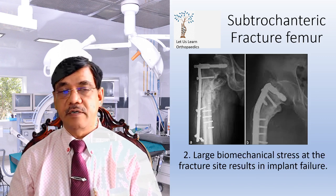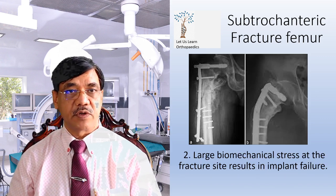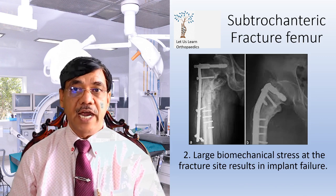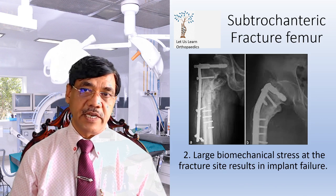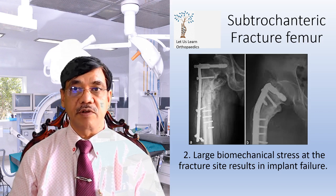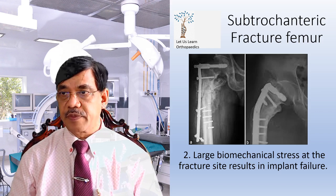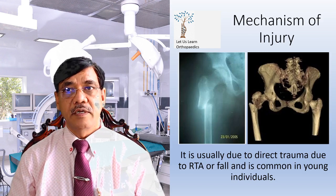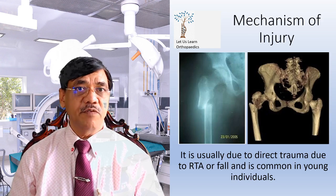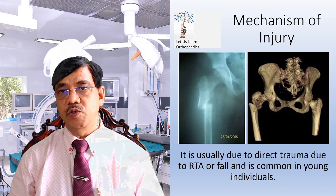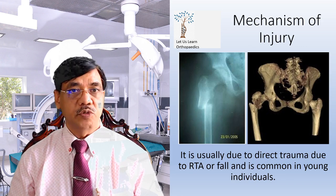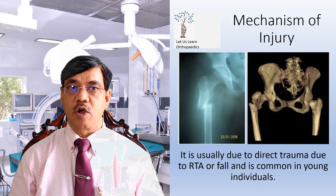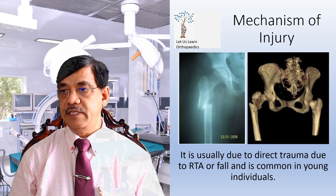The second important factor for slow union is the large biomechanical stress at the fracture site, which results in implant failure often. As seen in this X-ray, the mechanism of injury is usually due to direct trauma from a road traffic accident or a fall, and is common in young individuals.